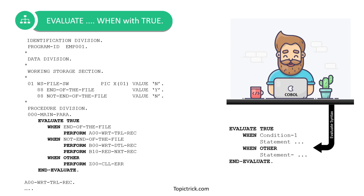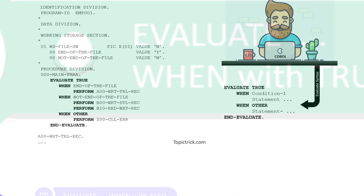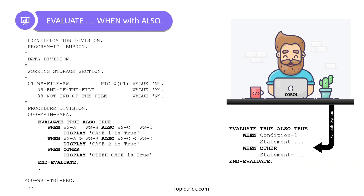The next variant is evaluate with ALSO. This is similar to the previous example, but here I am checking more than one condition at the same time. I've used EVALUATE TRUE ALSO TRUE, meaning both conditions specified in the WHEN clause must be satisfied for the statements to execute. In the example: WS-A equals WS-B ALSO WS-C equals WS-D — both pairs of fields must be equal, and then 'case one is true' will be displayed as output.